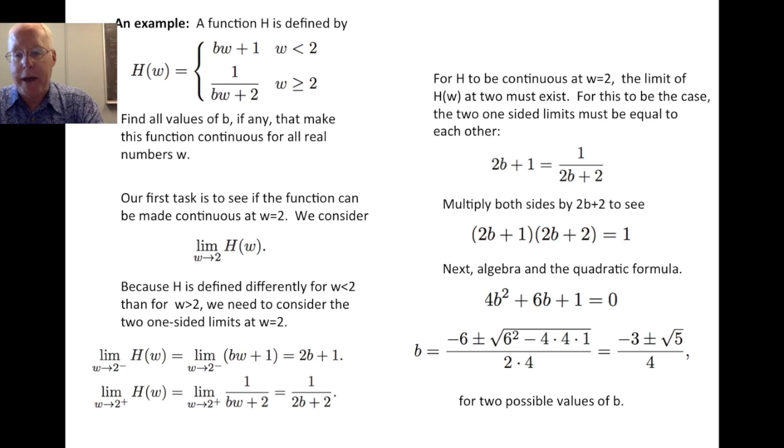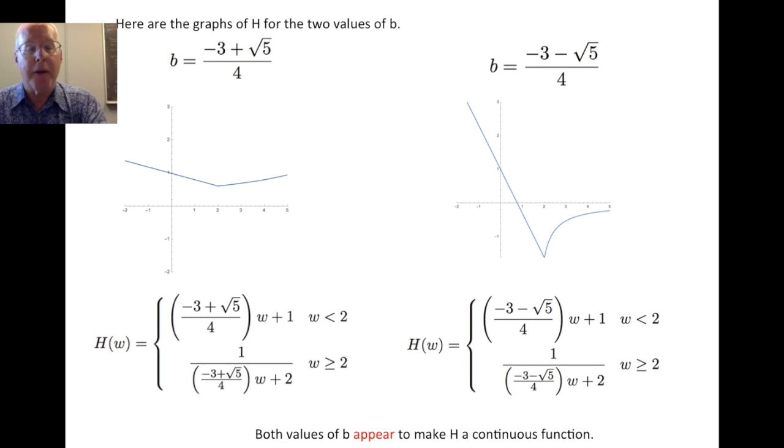And if we apply the quadratic formula to find the values of b that make this quadratic equal to 0, we find that b has two values, either minus 3 plus the square root of 5 over 4, or minus 3 minus the square root of 5 over 4. So there's two possible values for b. Now, we still want to check and make sure those values for b make h continuous. So one way to start that investigation is by looking at some graphs. So here are the graphs of the two functions that result from the two values of b.